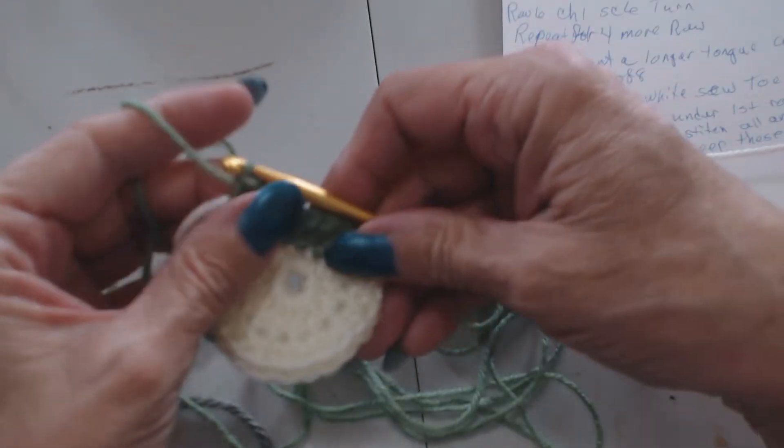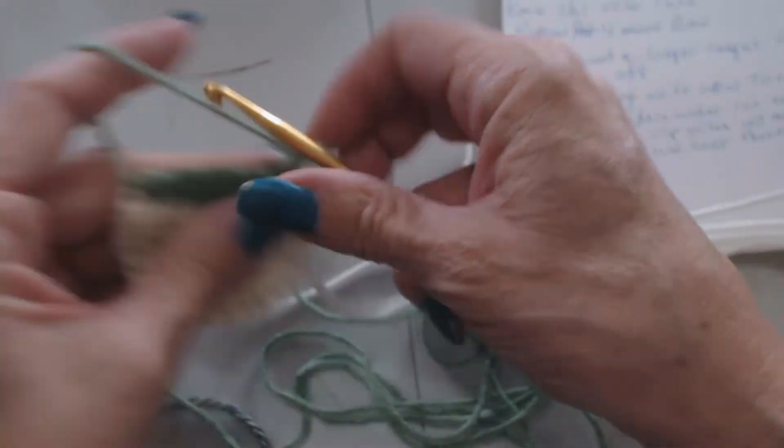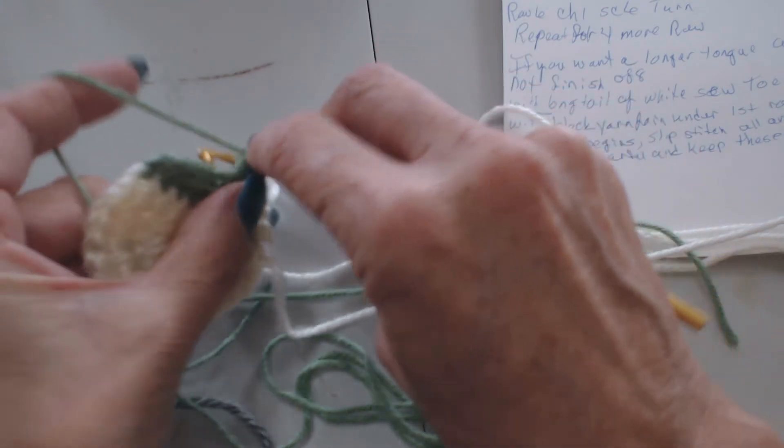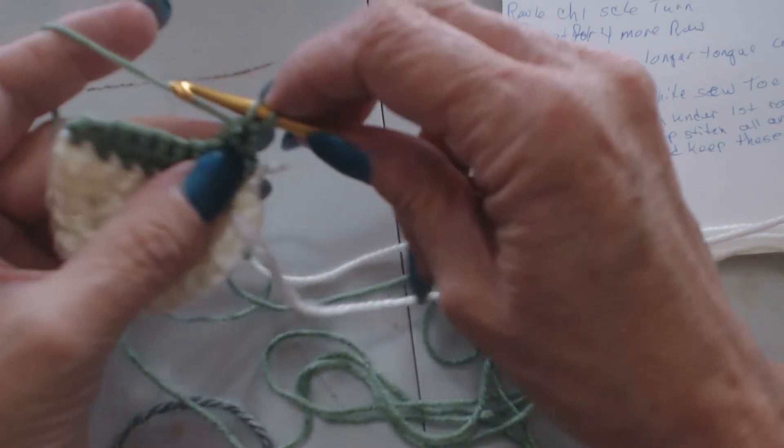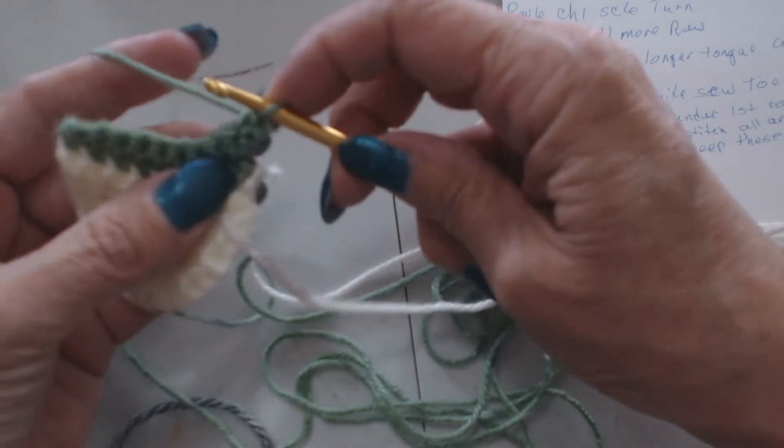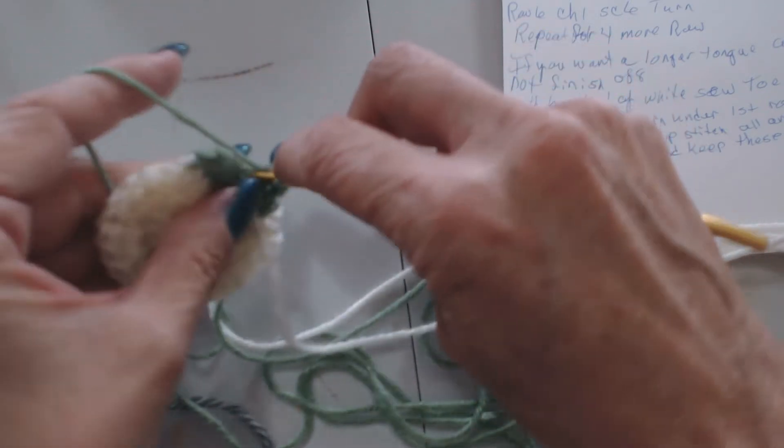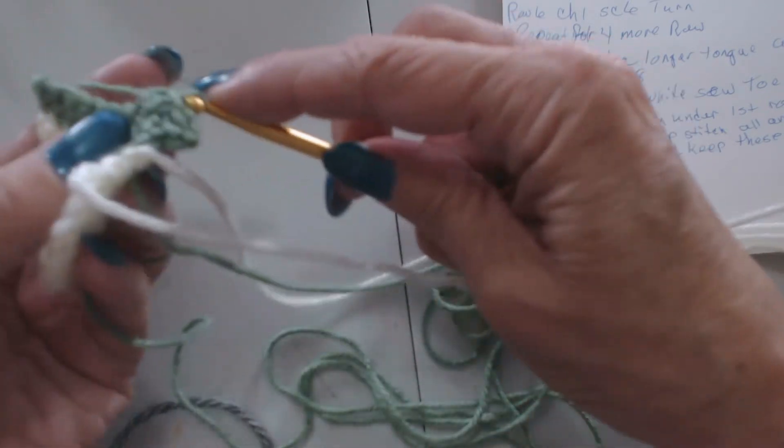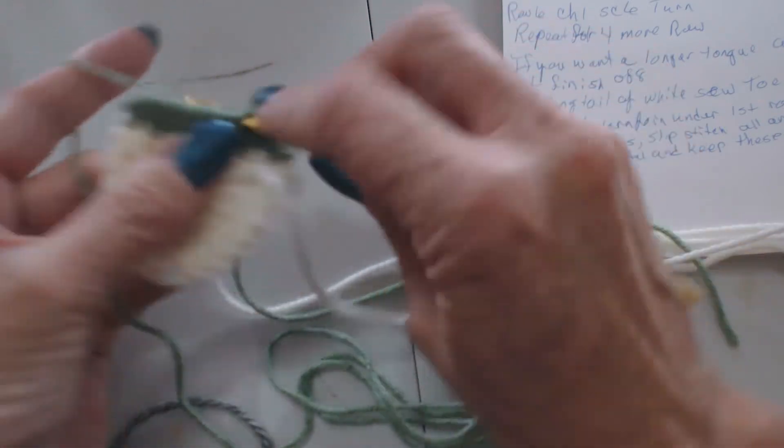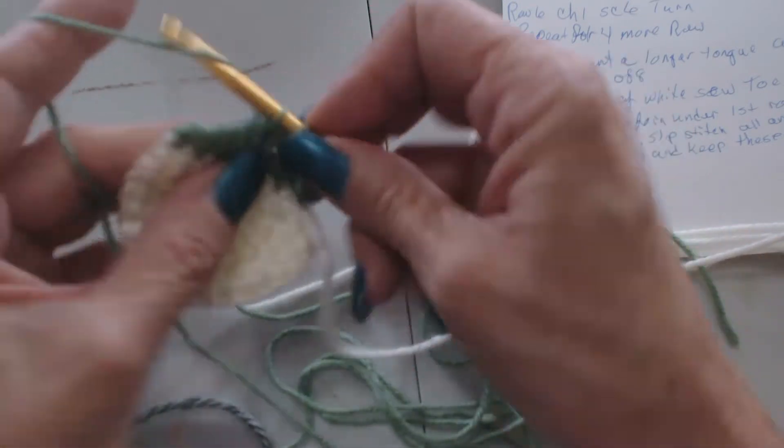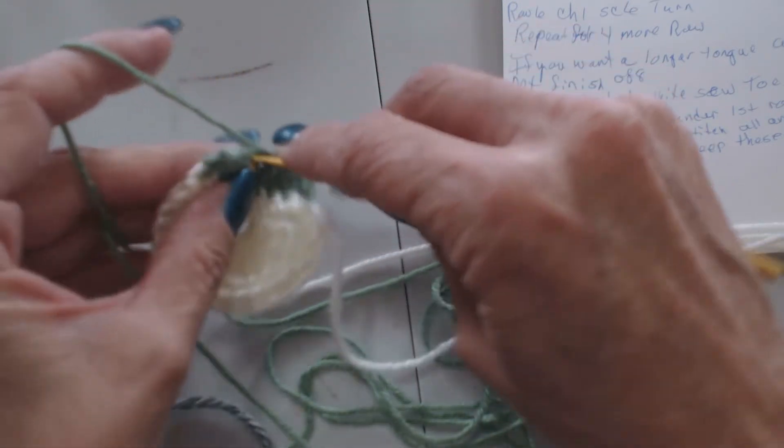Okay, so that was row two. We turn and we chain. Now on mine there'll be nine. On yours there'll be eight. But that's just because this thread is a little lighter. And so it's just a little adjustment that you can do if you want to.